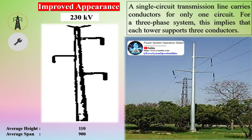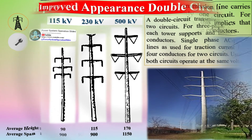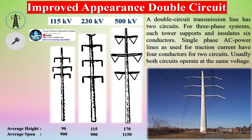Electrode line towers are used in some HVDC schemes to carry the power line from the converter station to the grounding electrode. They are similar to structures used for lines with voltages of 10 to 30 kV, but normally carry only one or two conductors. AC transmission towers may also be converted to full or mixed HVDC use to increase power transmission levels at a lower cost than building a new transmission line.